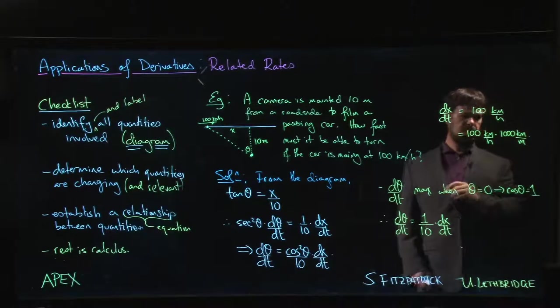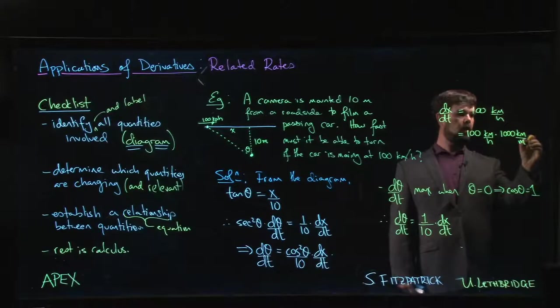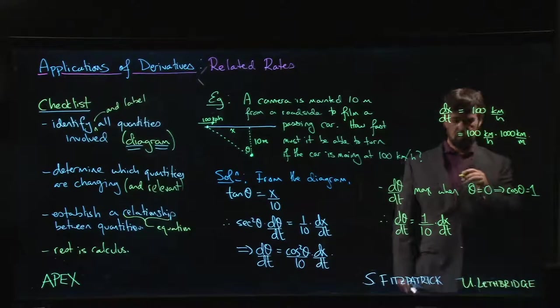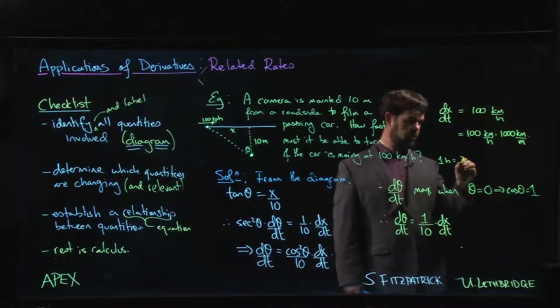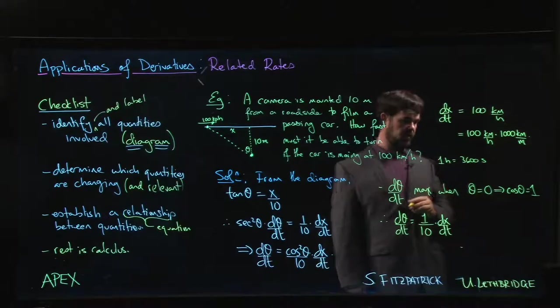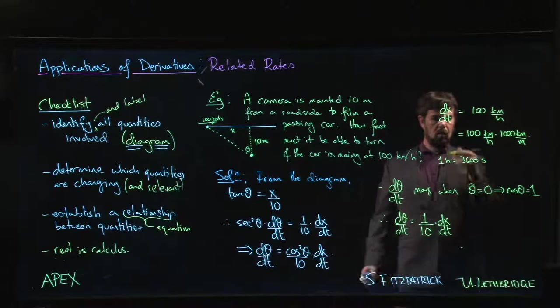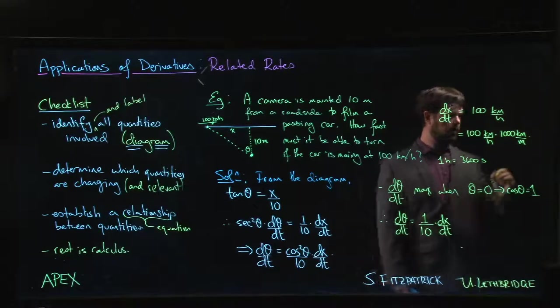We want per hour, so one hour is 3600 seconds, so 1 over an hour is 1 over 3600. This is going to be 1 over 3600 hours per second.